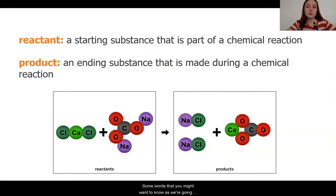Some words that you might want to know as we're going through our lesson today are that scientists have a way of talking about the before and after mixture substances. A reactant is a starting substance that is part of a chemical reaction. So, those would be the things that I had at the beginning before I mixed them together. We call something a product, and this is the ending substance that is made during a chemical reaction.